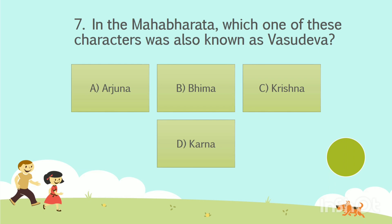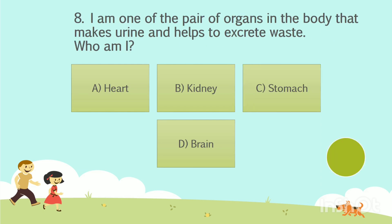Question No. 7: In the Mahabharata, which one of these characters was also known as Vasudeva? Option A: Arjuna. Option B: Bhima. Option C: Krishna. Option D: Karna. Your time starts now. The answer is Option C: Krishna.